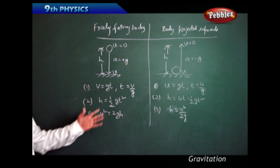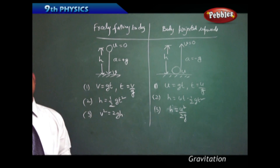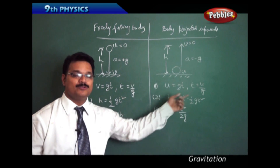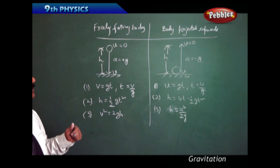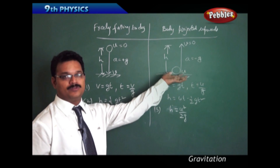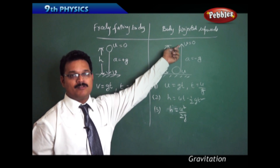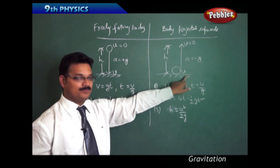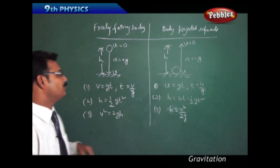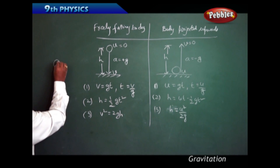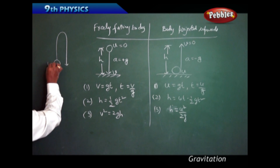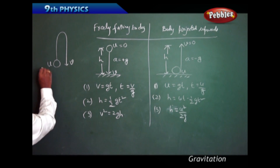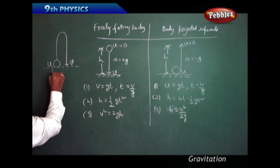We have learned the different cases for body projected upwards and freely falling body. Notice the two formulas: T = V/G for time of descent and T = U/G for time of ascent. If a body is projected upward and falls back to the same ground level, when projected upward it has initial velocity U, and when falling back down it has final velocity V. Since both points are at the same level, U equals V.